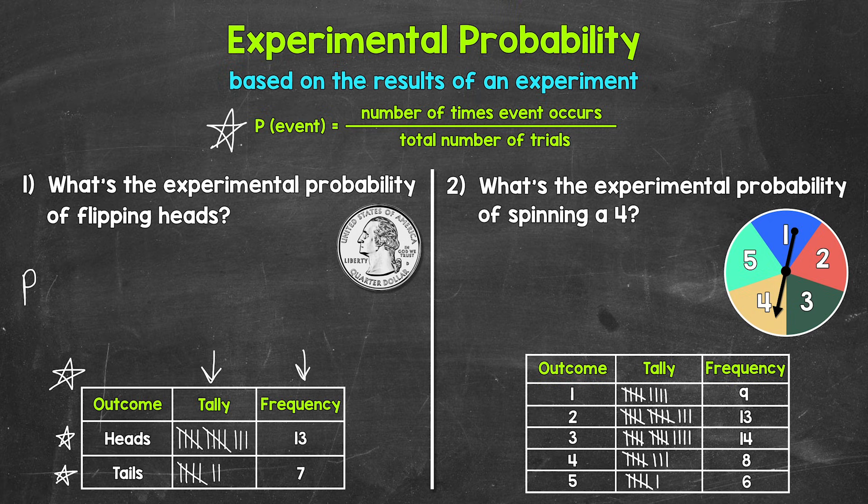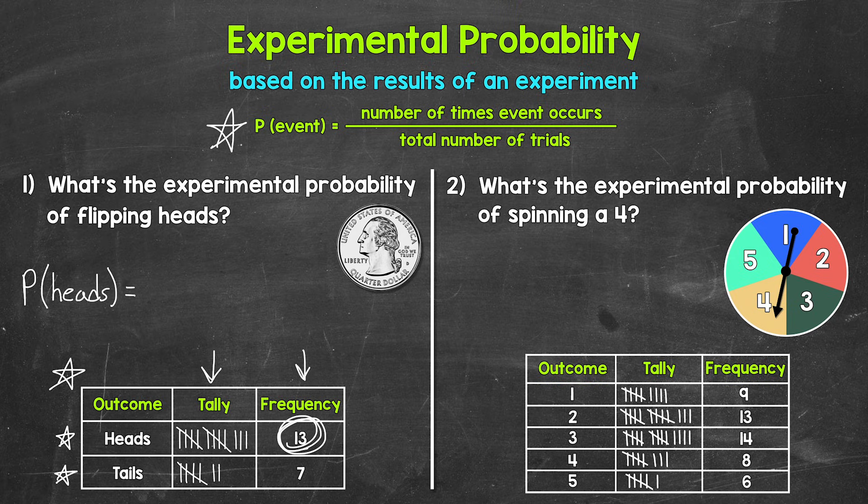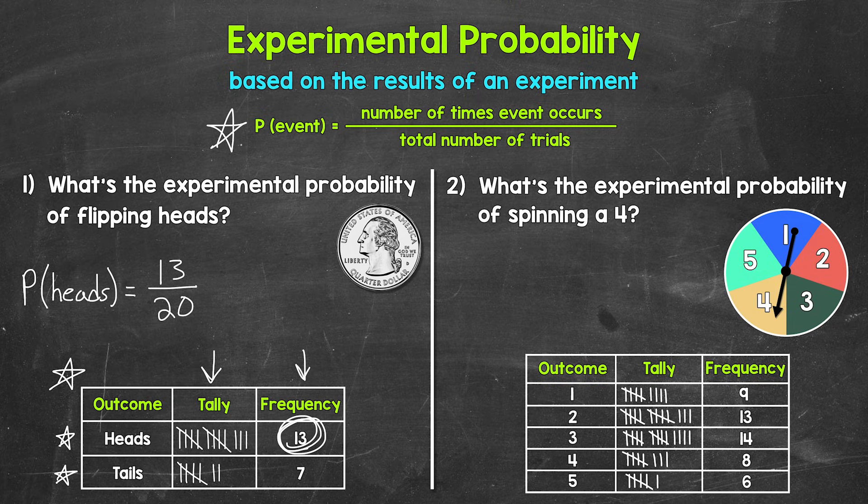So for number one, we have the probability of flipping heads. That's our event. And now we need the number of times the event occurred over the total number of trials. So as far as the number of times the event occurred, heads was flipped 13 times. So we have 13 over the total number of trials, the total number of flips. That's 20. And that's our experimental probability as a fraction, 13 over 20.